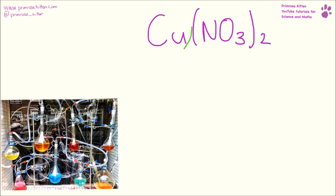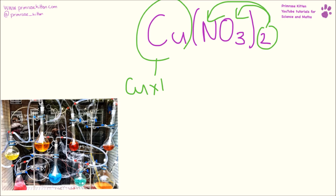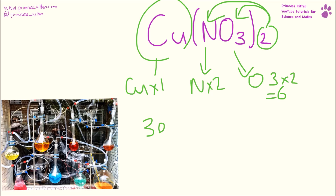Here we have one lot of copper and two times everything inside. So nitrogen times two, and oxygen — three times two gives us six. So we have three elements and we have nine atoms.